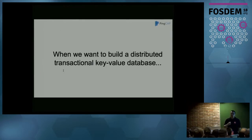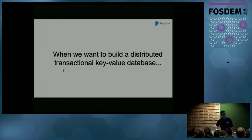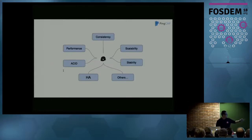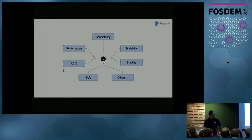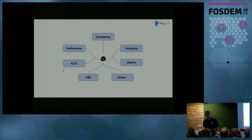When we want to build a distributed transactional key-value database, we found that we need to meet many, many problems and conquer many, many challenges. We must guarantee our database has data consistency, is scalable and stable, has high performance and high availability. Of course, we must let our database follow ACID compliance, and there are many other problems we need to conquer. This is our nightmare.